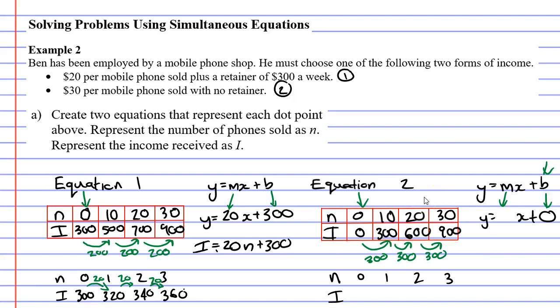We know that if we sell zero phones, we get zero dollars. Each phone is worth $30 in the second dot point. So if I sell one phone, I get $30. If I sell two, I get 60. If I sell three, I get 90. And we can see that this time we're going up by 30. So m will be 30.